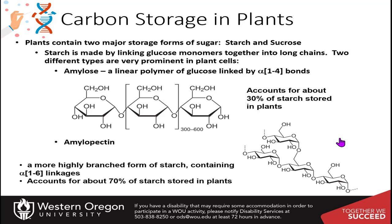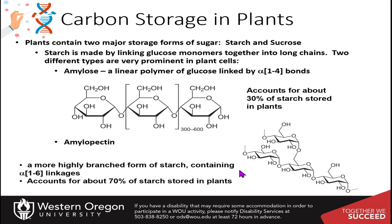There are two types of starch: amylose and amylopectin. Amylose is the linear alpha-1,4 bonded polymer of glucose, accounting for about 30% of starch stored in plants. Amylopectin has branching at the 1,6 positions — not as highly branched as glycogen, with an alpha-1,6 linkage about every 25 to 30 residues — and accounts for about 70% of the starch stored in plants.